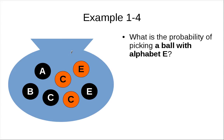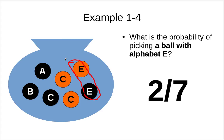And what is the probability of picking a ball with alphabet E? There are two balls with alphabet E, so it's two over seven.